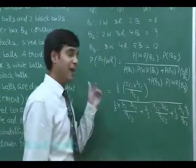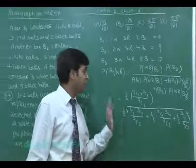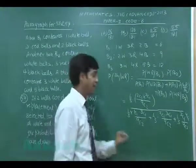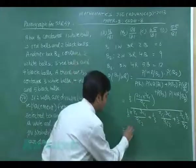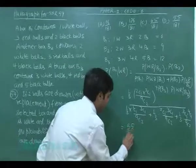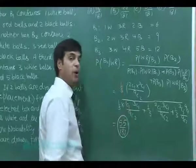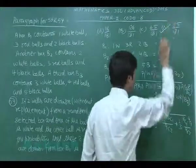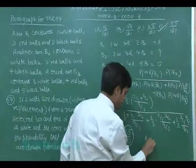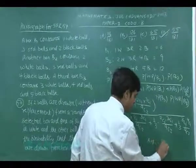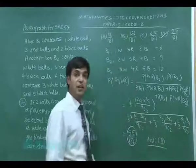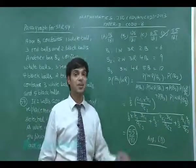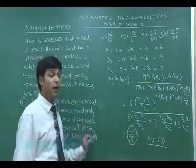Just simplify this data. 9C2 can simply be cancelled. 3 of denominator can also be cancelled out. Just simplify and that gives me the answer as 55 upon 181. That is the correct answer option number D. In this manner we get the solution for this question also. So now move to the next question that is question number 55.